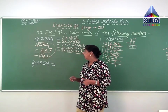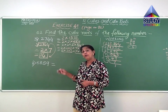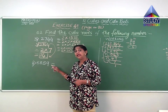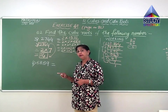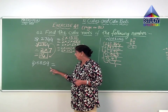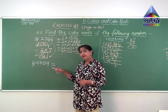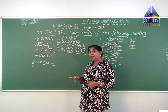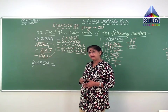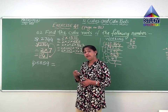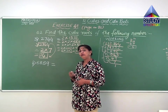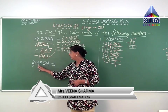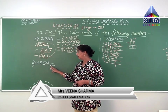Now let us move to the next sum. We can see that 9 is odd, so let us try with 3. We follow the test for 3 and find the sum of the digits.